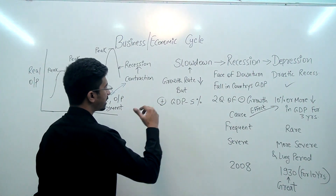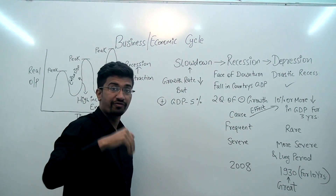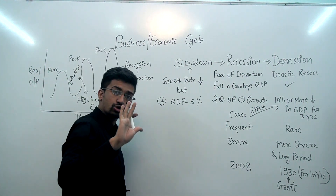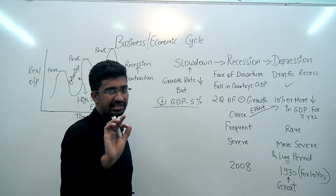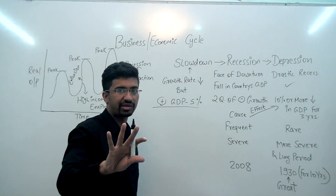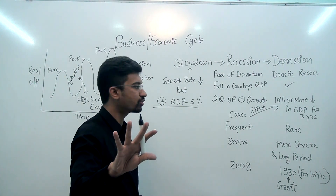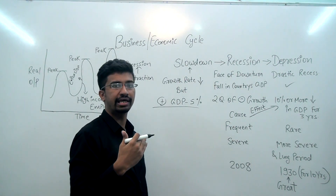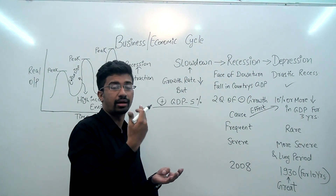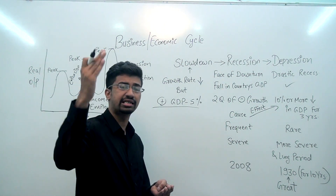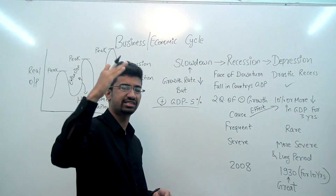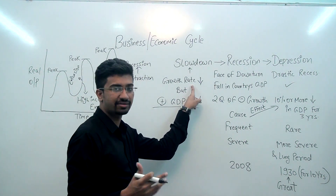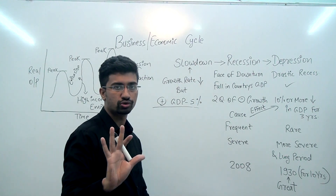Now, when we talk about an economic slowdown — though our GDP is positive, it is above zero, it is growing at 5%, so it's at least positive — but our GDP growth rate has decreased. Supposedly we were moving ahead with 8% GDP growth rate, then 7.5%, and now we are standing at 5%. So though it is positive, but our growth rate has decreased — that is what we call a slowdown.